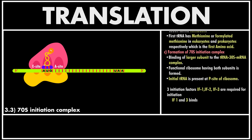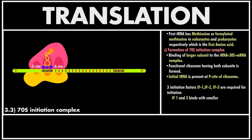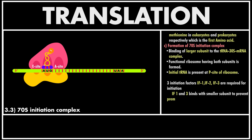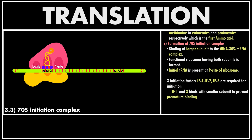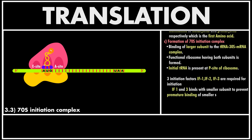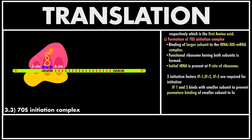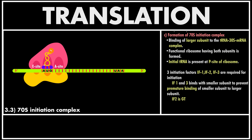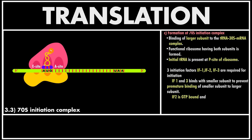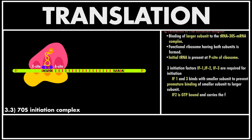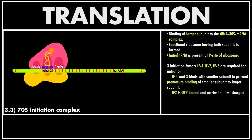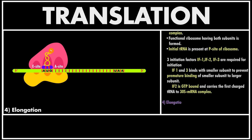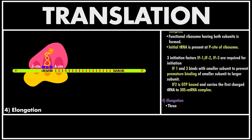Initiation factors are divided into IF1, IF2, and IF3. The function of IF1 and IF3 is to prevent premature binding of the larger subunit to the smaller subunit of ribosomes. IF2 is a GTP-bound protein and carries the initial charged tRNA to the 30S mRNA complex.